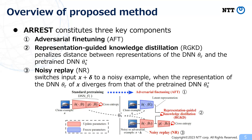ARREST constitutes three key components. First, adversarial fine-tuning, as previously explained. Second, representation-guided knowledge distillation (RGKD), which penalizes the distance between the representations of the fine-tuning DNN and the pretrained DNN, constraining the representation from changing drastically. Finally, noisy replay (NR), which switches the training adversarial examples to noisy examples when the representation of a clean example diverges significantly from that of the pretrained DNN. This component is inspired by the replay technique, which avoids catastrophic forgetting in continual learning.